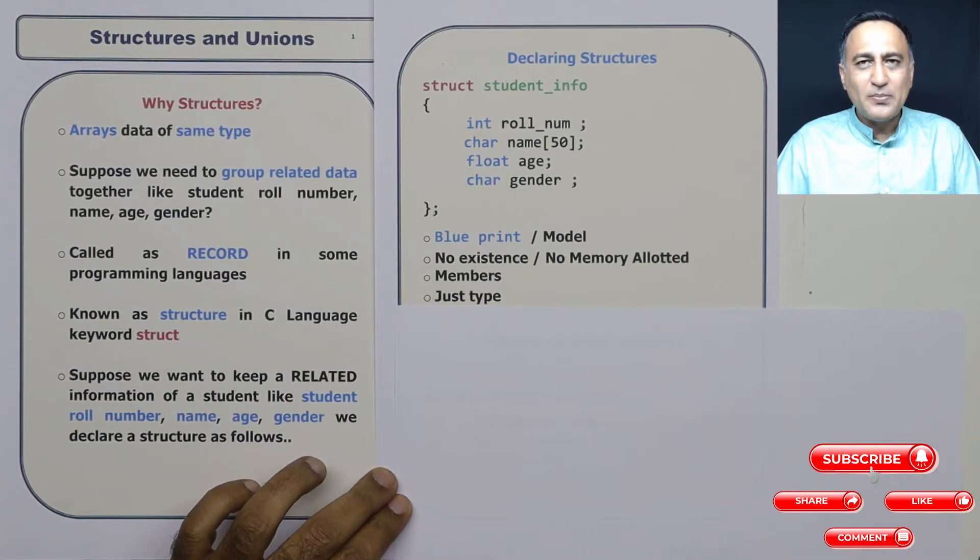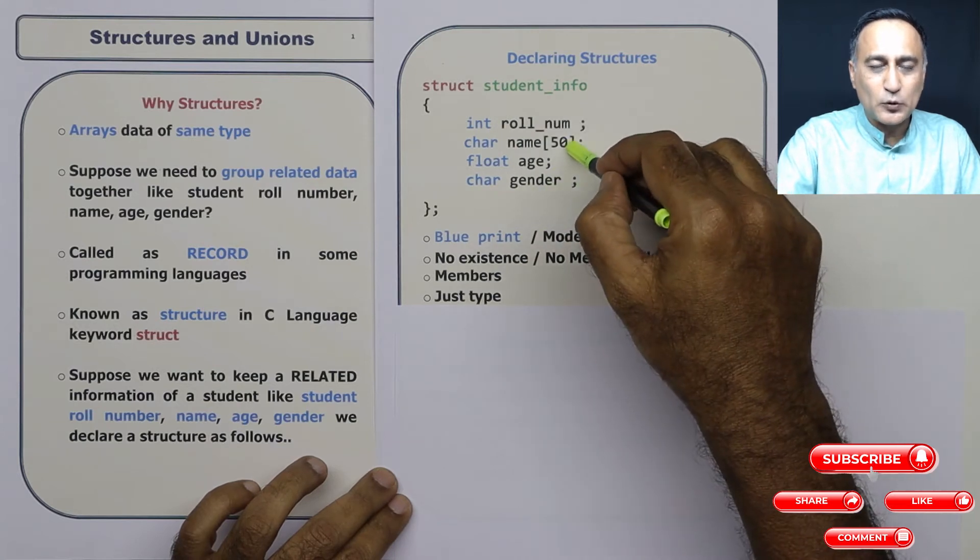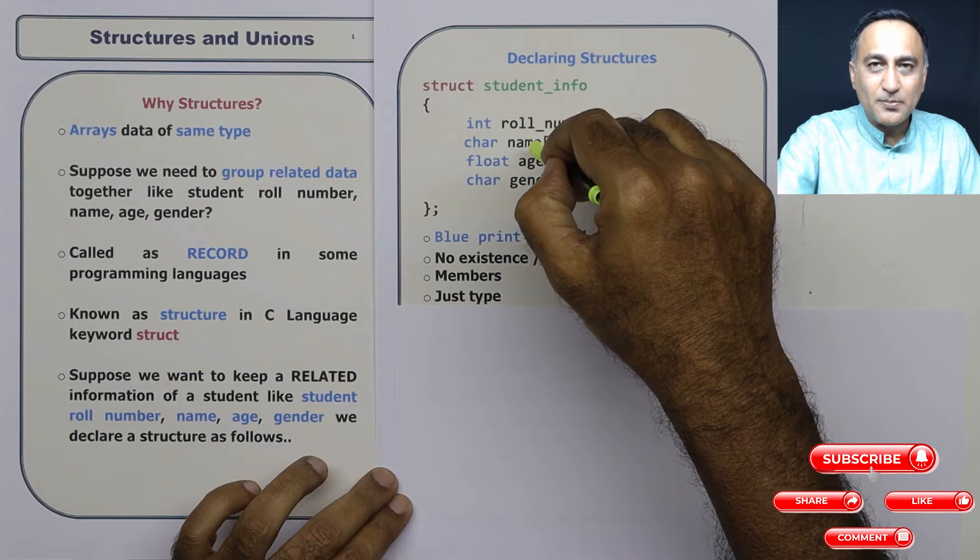Let us say you have to build a house, you will go to the architect, the architect will give you a plan or a model or a template. Is that the actual house? No, it is not the actual house. So same here, this is the model or a template or a prototype.